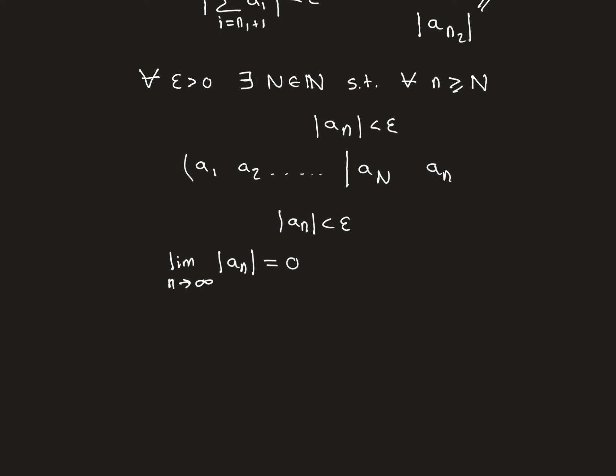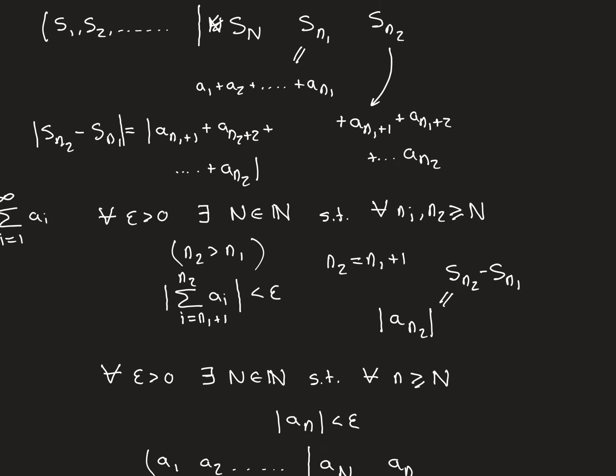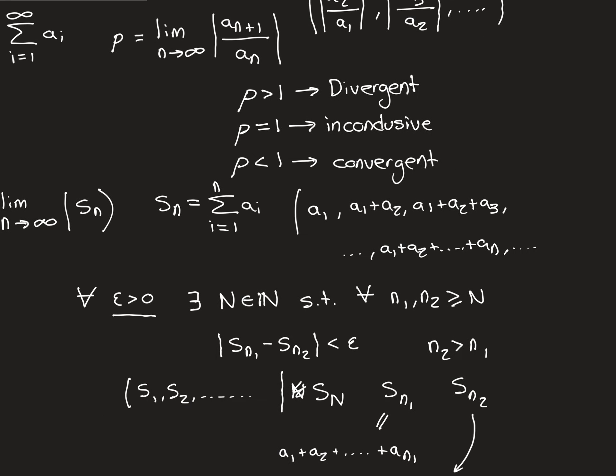What does this have to do with the ratio test? We're going to use this to show part of the ratio test — specifically that if rho is greater than 1, the series is divergent. The reason is that when rho is greater than 1, it will disobey the necessary criterion that the limit of the terms must go to zero, which must be obeyed for the series to converge.